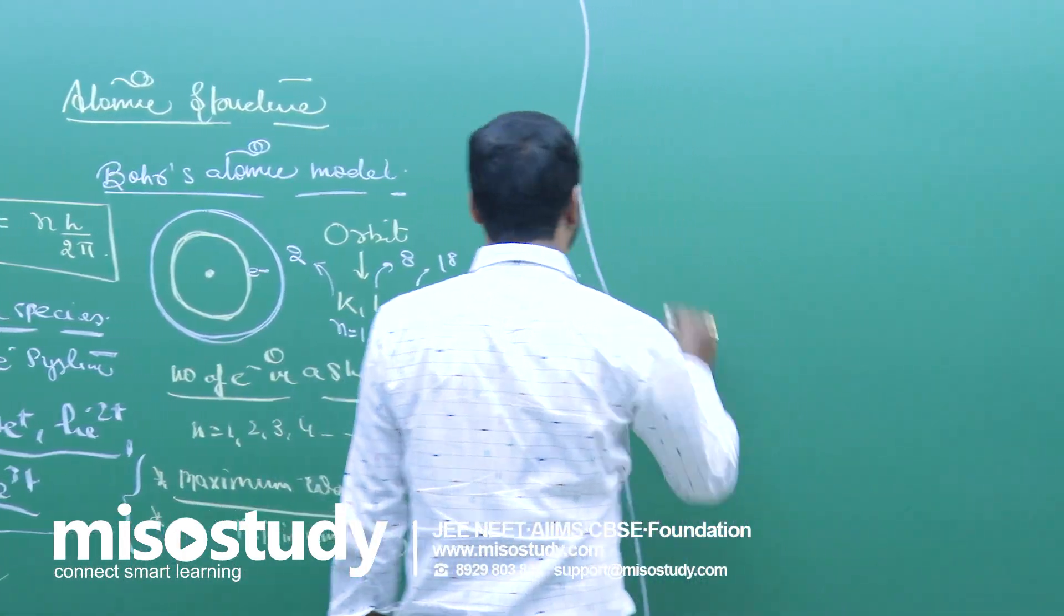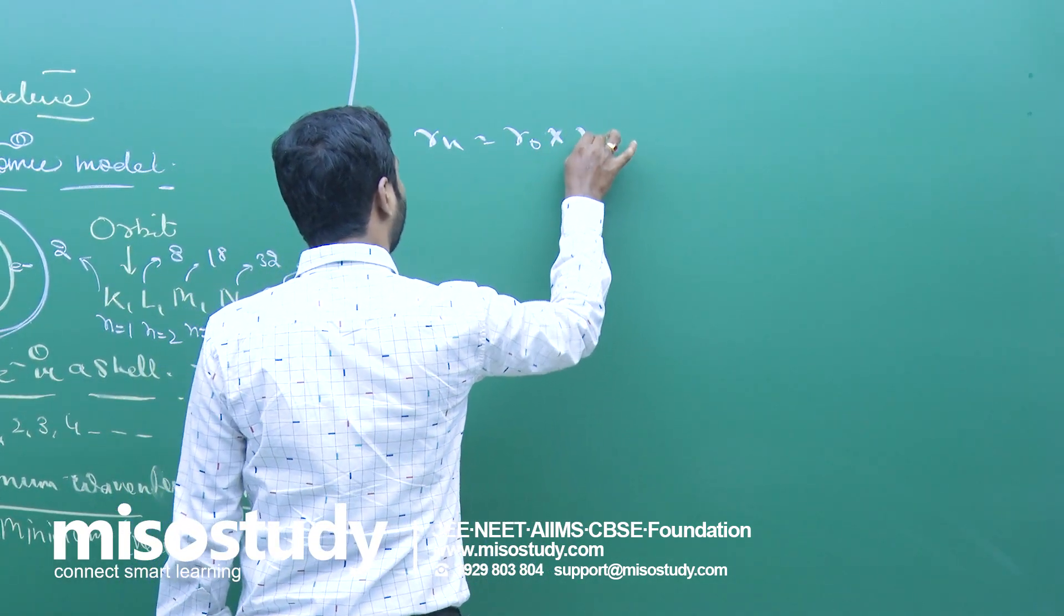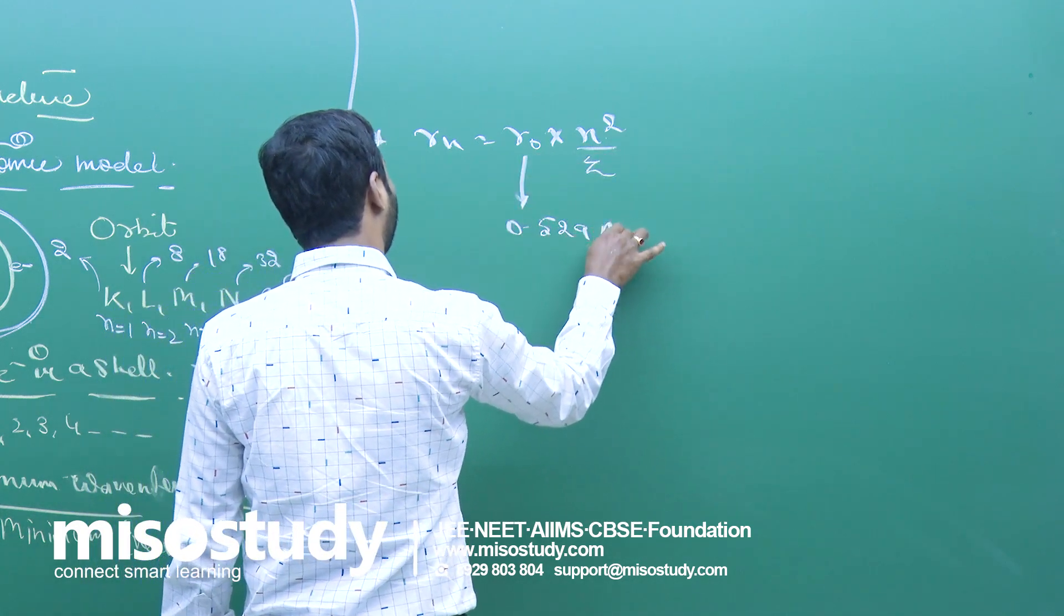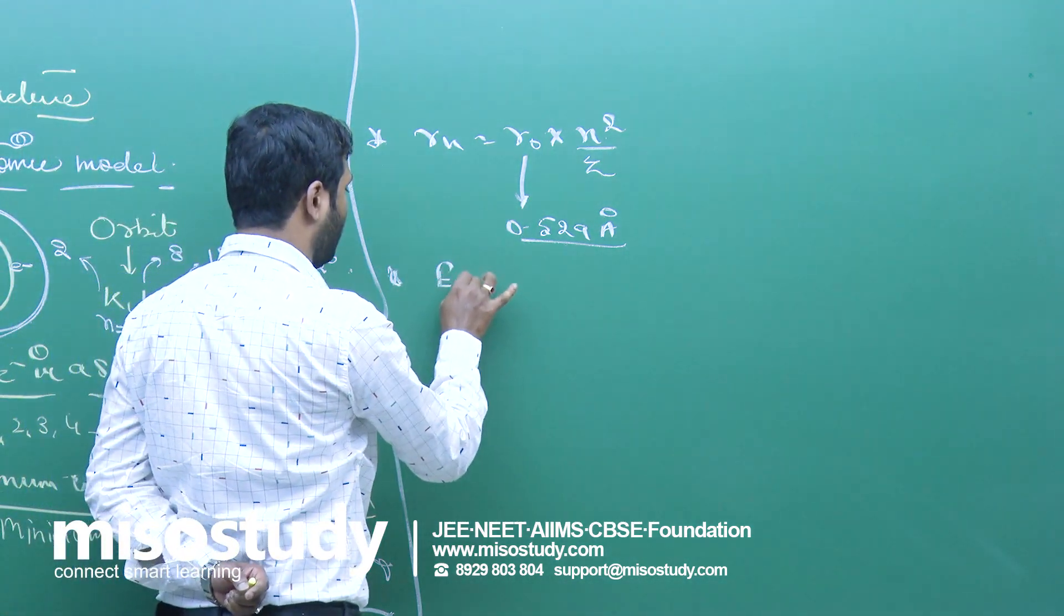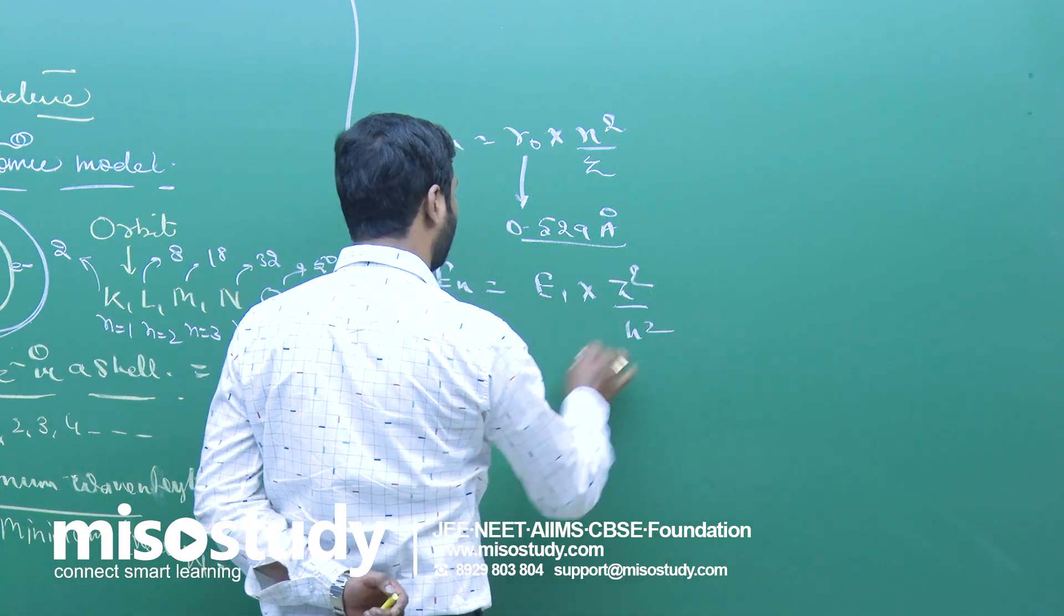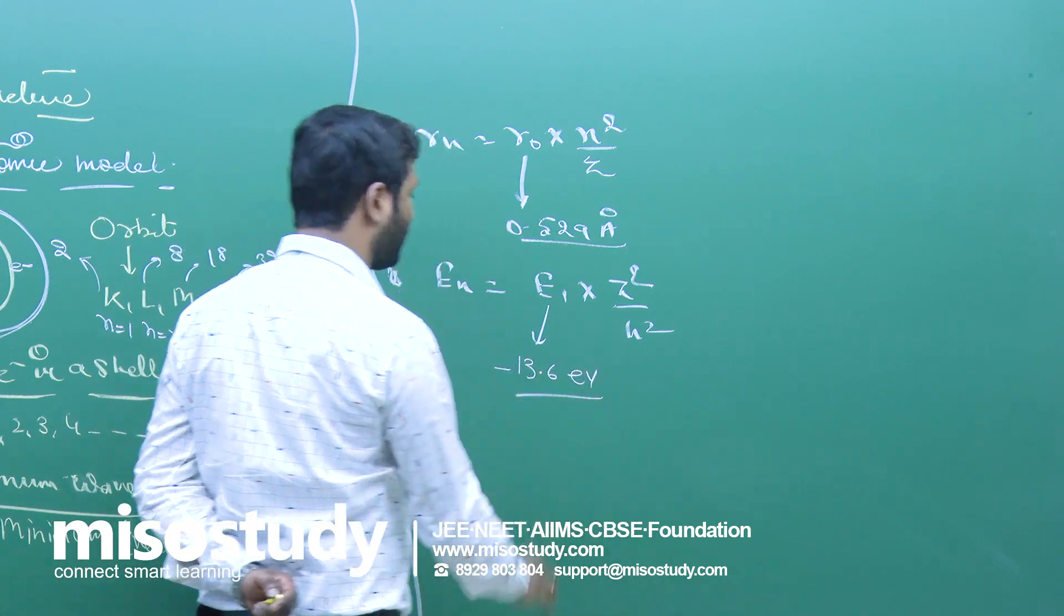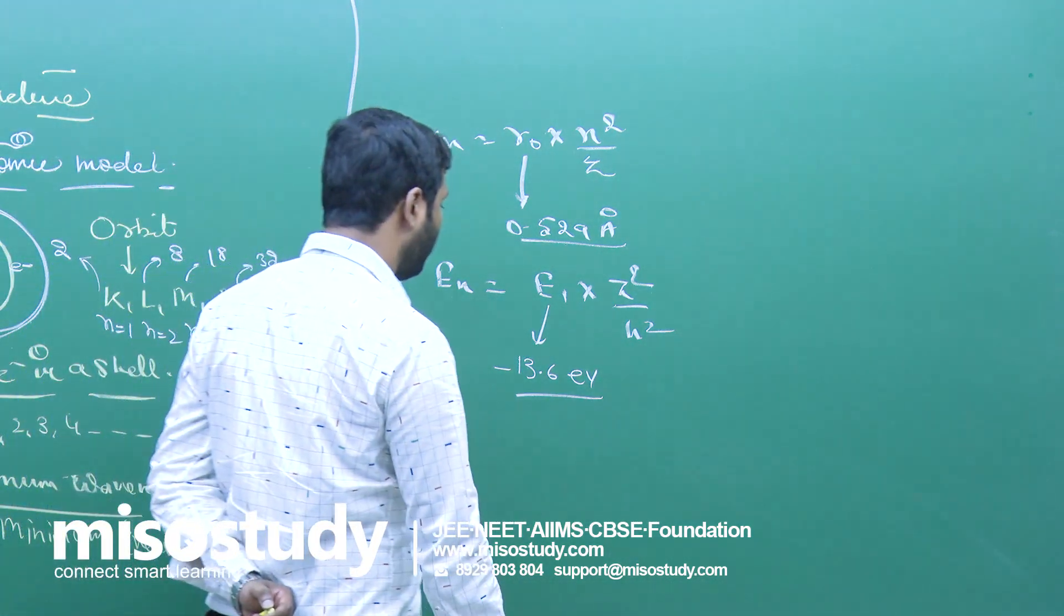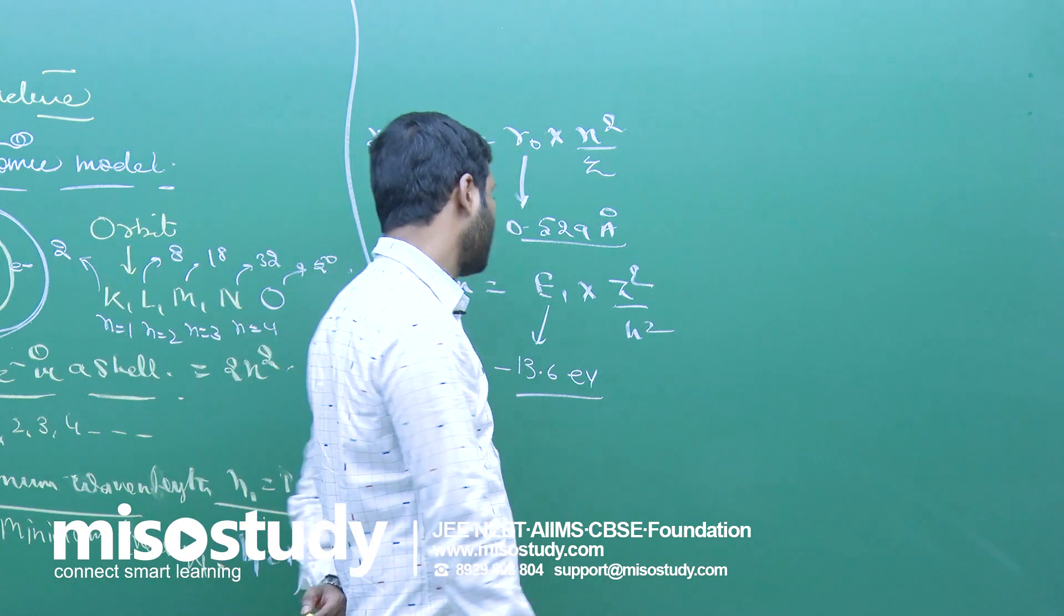We have the next one, radius of n-orbit. rn equals r₀ into n² upon z. What is r₀? That is 0.529 angstrom. Energy of n-orbit equal to E₀ or E₁ multiply z² upon n². This is equal to minus 13.6 eV electron volt, or minus 1312 kilojoule, or 2.18 into 10 to the power minus 19.